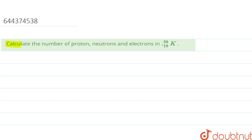Hello, in this question we are given to calculate the number of protons, neutrons and electrons in K-39-19. So in this question we have to calculate the number of protons, neutrons and electrons present in potassium K-39-19. The element we are given is potassium 1939.